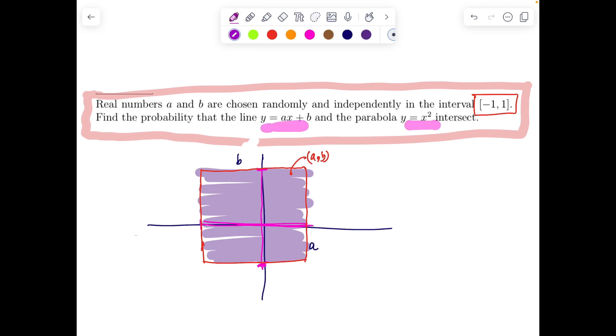Next, we want this line to meet this curve. It means x² = ax + b should give real roots. So x² - ax - b = 0 must give real roots.